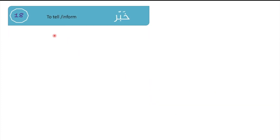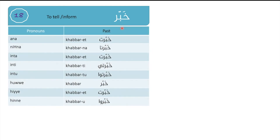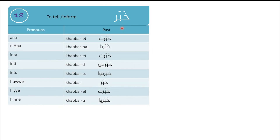Our third verb is خبّر (khabbar), meaning to tell or to inform. Conjugation: ana khabbarat, nihna khabbarna, enta khabbarat, enti khabbarati, entu khabbaratu, huwa khabbar, hiye khabbarat, henne khabbaru.